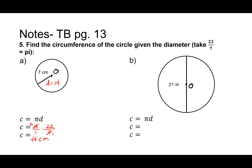How about our final circle? Kendall, what's the next line of work? Times 21 over 1 — great job! Did you cross-cancel? And what did you get for your final answer? 66 inches — perfecto! All right, I'm going to hide these meeting controls here. We're feeling pretty good on circumference.